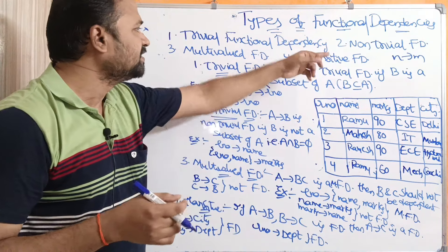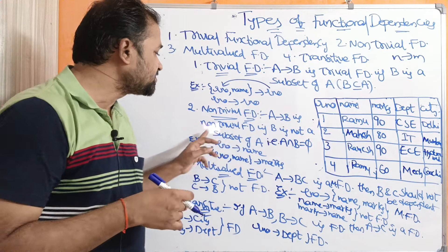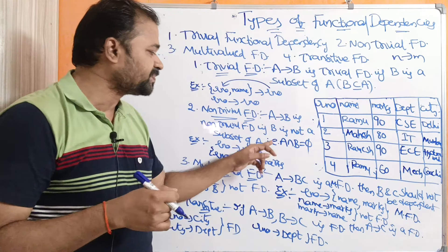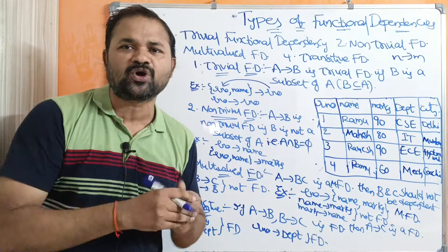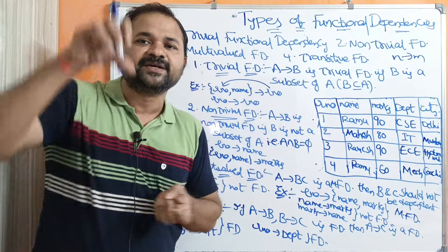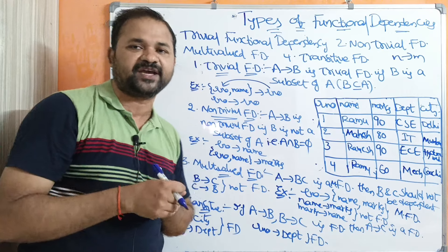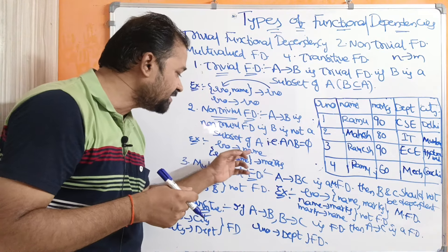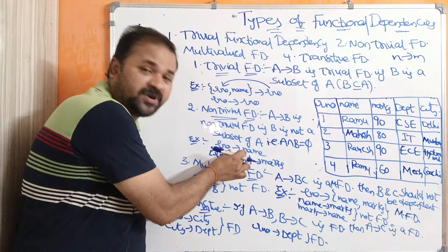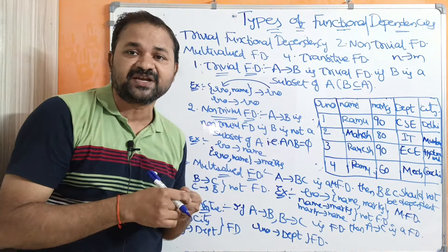Now let us see the second one — non-trivial functional dependency. A determines B is a non-trivial functional dependency if B is not a subset of A, meaning there are no common values. That is, A ∩ B = ∅. Trivial means B is a subset of A, whereas non-trivial means B is not a subset of A. For example, roll number determines name — there are no common values between roll number and name, so we can say that this is a non-trivial functional dependency.